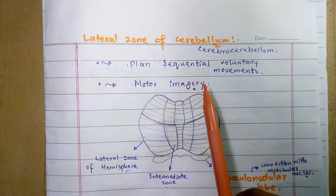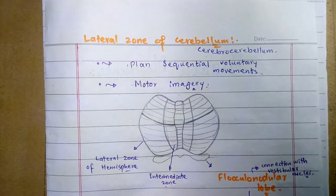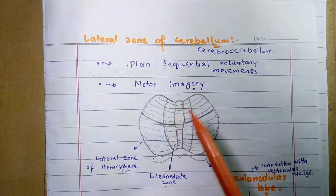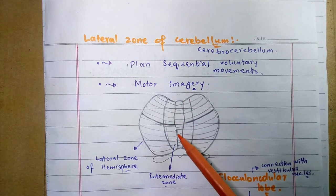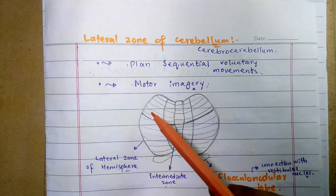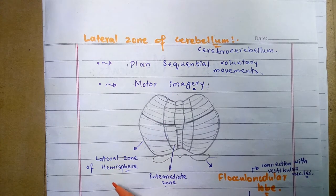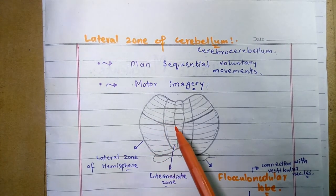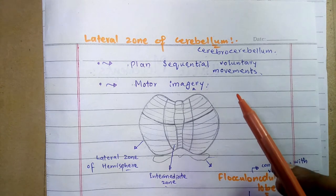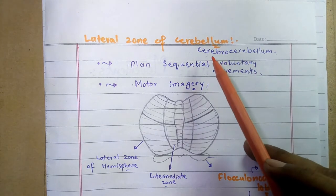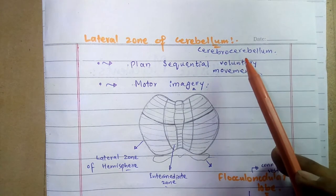The lateral zone of the cerebellum is present on the lateral side of the intermediate zone. The central point is the vermis, and this lateral area is the lateral zone of the hemisphere. Due to its extensive connections with the cerebral cortex, it is also called the cerebro-cerebellum.